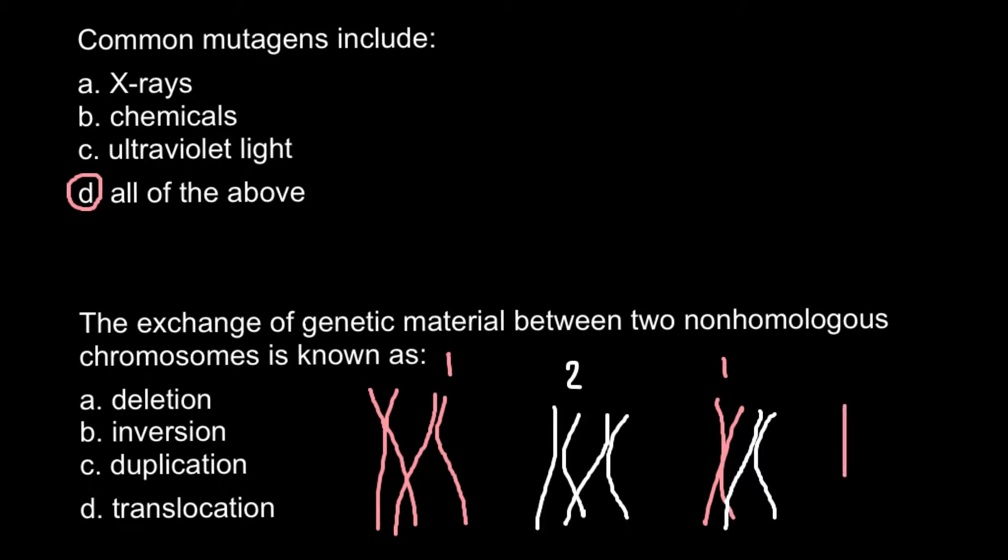When they would exchange genetic material, we would have one normal chromosome, one chromosome with a piece of chromosome number two. We also would have one chromosome number two with a piece of chromosome number one, and we also would have one normal chromosome. So we would have one normal chromosome number one, one chromosome with a piece of a different non-homologous chromosome, and we call this translocation. This would be number one plus number two, and this is also going to be number one plus number two, or number two plus number one.